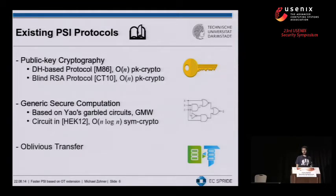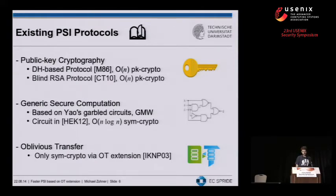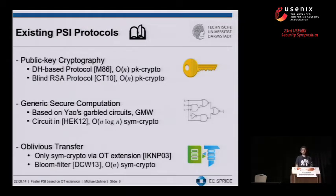We've also seen a recent trend where protocols use oblivious transfer directly to perform set intersection. Keep in mind that OT can be done very efficiently — there are many works that perform oblivious transfers using only very little symmetric cryptographic operations. The most prominent of these is the Bloom-filter-based protocol from CCS 2013, which requires a linear number of symmetric cryptographic operations.